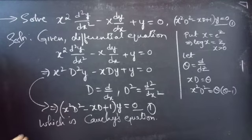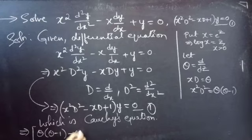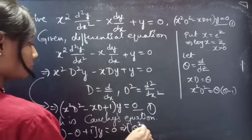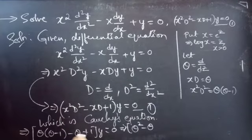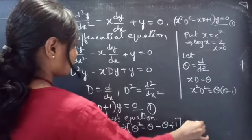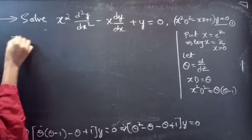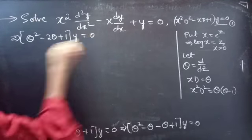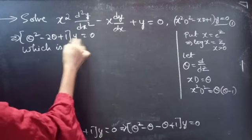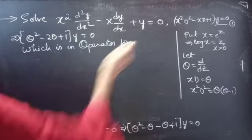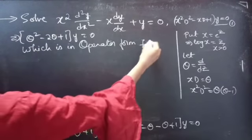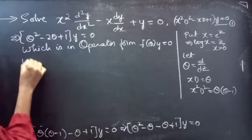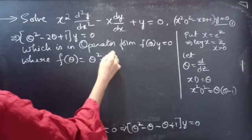Equation 1 becomes: replace x²D² with θ(θ−1) and xD with θ, so we get θ(θ−1) minus θ plus 1, times y equals to 0. Expanding: θ² minus θ minus θ plus 1, which gives θ² minus 2θ plus 1 times y equals to 0. This is the operator form, where θ is a differential operator, and f(θ) equals θ² minus 2θ plus 1.